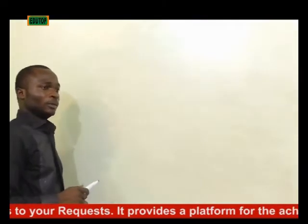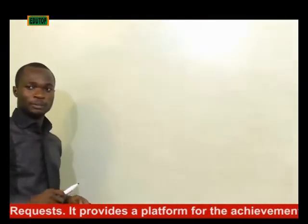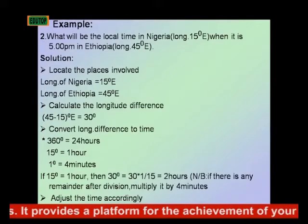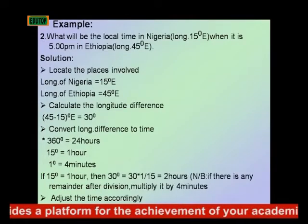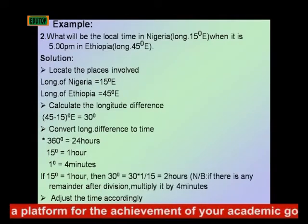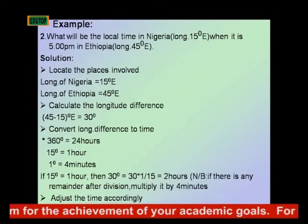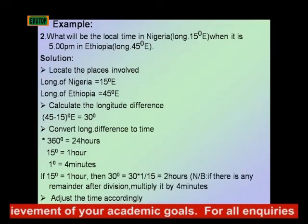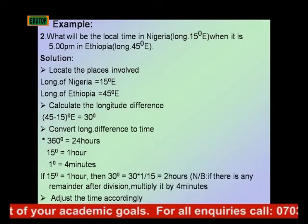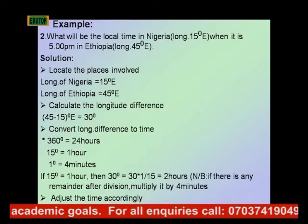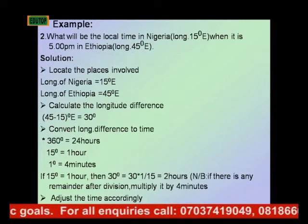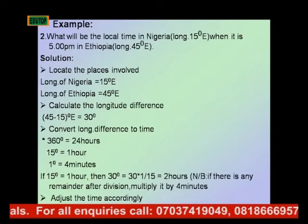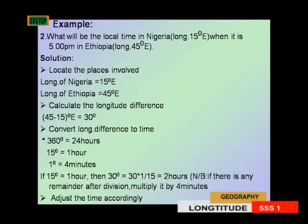Now let's consider this example. What will be the local time in Nigeria at longitude 15 degrees east, when it is 5 PM in Ethiopia at longitude 45 degrees east? Solution.